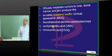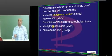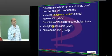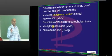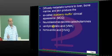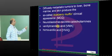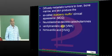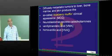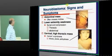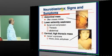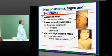What are the two common substances assayed in the urine to make a diagnosis of neuroblastoma? Vanillylmandelic acid (VMA) and homovanillic acid (HVA) are the ones which need to be remembered.